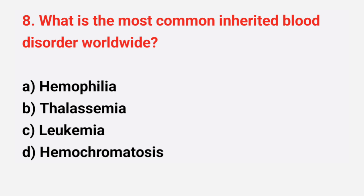Question number 8: what is the most common inherited blood disorder worldwide? The right answer is option B, thalassemia.